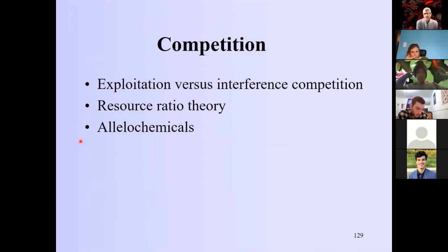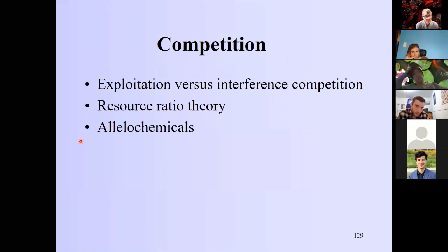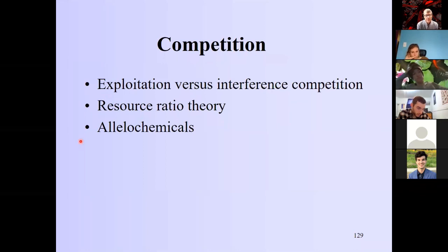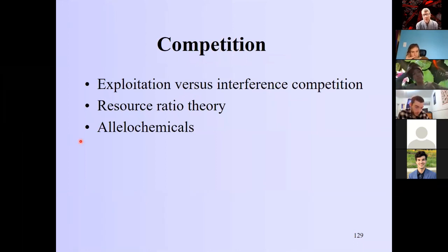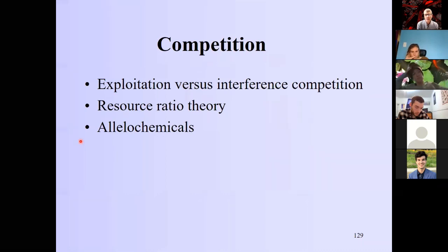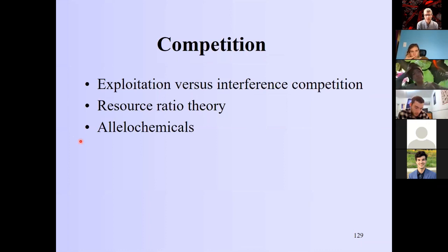Now competition — exploitation versus interference competition. If you're competing for a nutrient by simply consuming as much as you can, that's exploitation competition. If you put out an allelochemical — a toxin that knocks back your competitor — that's interference competition. We'll talk more about allelochemicals and resource ratio theory.